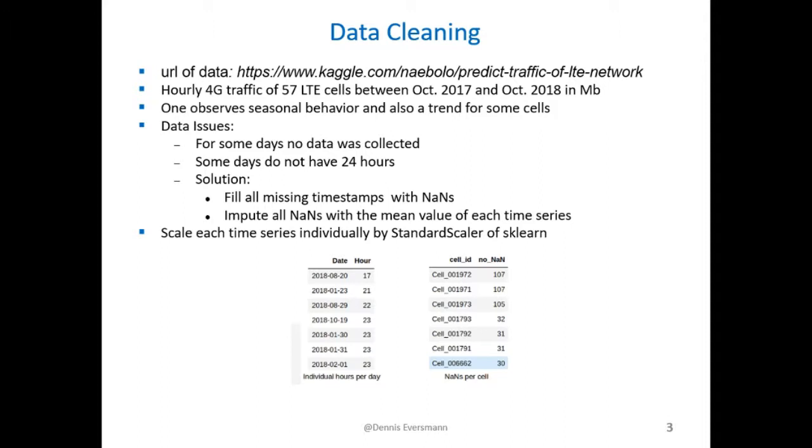The data used in the analysis can be found at kaggle.com and contains hourly traffic data for 57 LTE cells between October 2017 and 2018. So in total we have one year of data. The data is given in megabytes per hour. Of course you can imagine that the data has seasonal behavior like hourly or daily weekly patterns and in addition a constant trend where the traffic is increasing over time.